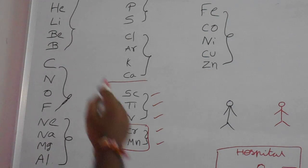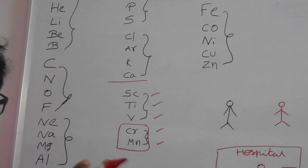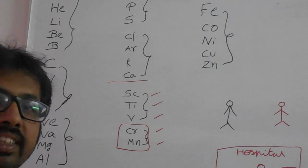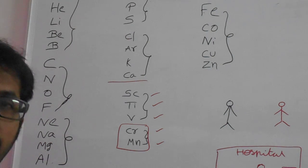We have to know the atomic numbers of all minimum 30 elements. We have to know. That makes chemistry easy. Okay, thank you.